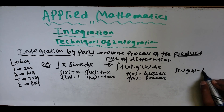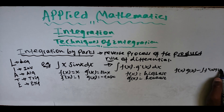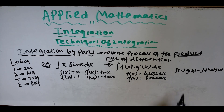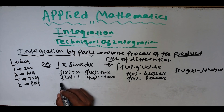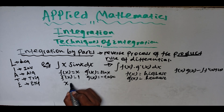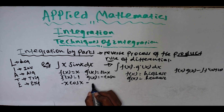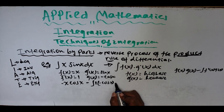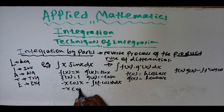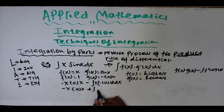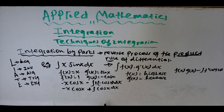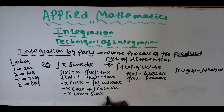Substituting into the formula: f(x)g(x) = x·(−cos x), minus the integral of f'(x)·g(x) = 1·(−cos x) dx. This gives −x cos(x) minus minus, which becomes −x cos(x) plus the integral of cos(x) dx. The integral of cos(x) is sin(x), so we get −x cos(x) + sin(x).